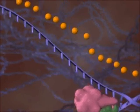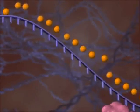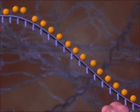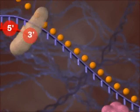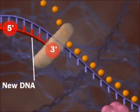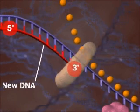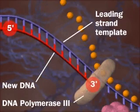One DNA strand encodes the leading strand, which forms from its 5' to its 3' end using DNA polymerase 3.